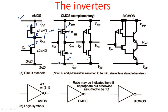The substrate terminal is always connected to the source unless body bias effect is needed. If you want to change the threshold voltage VT, then body bias effect is required, and a built-in potential between source and substrate must be applied. Otherwise, source and substrate are short-circuited. This variable threshold voltage is an advantage of MOS technology — in BJT we cannot change the threshold voltage, but in MOS technology we can.